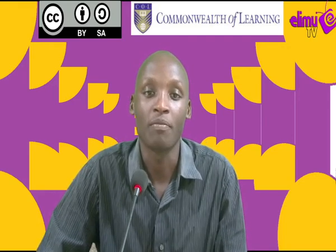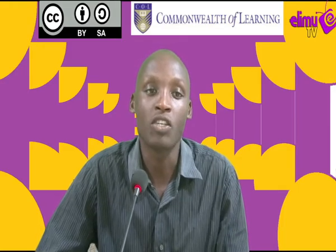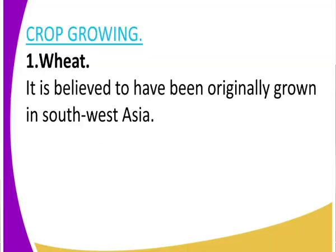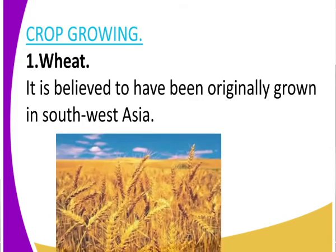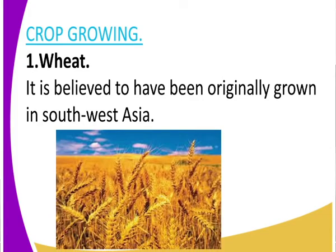Let us look at some of the crops that were earlier domesticated. The first crop is wheat. Wheat is originally believed to have been grown in southwest Asia. We have a good image there of wheat — that is wheat.